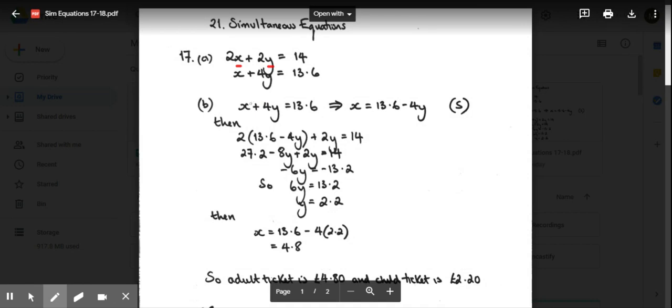You're told in the text a family of two adults and two children go to the cinema and it costs 14 pounds, so here we have 2x + 2y = 14. You're also told one adult, which is x, takes four children, 4y, and that costs 13 pounds 60, so x + 4y = 13.6.